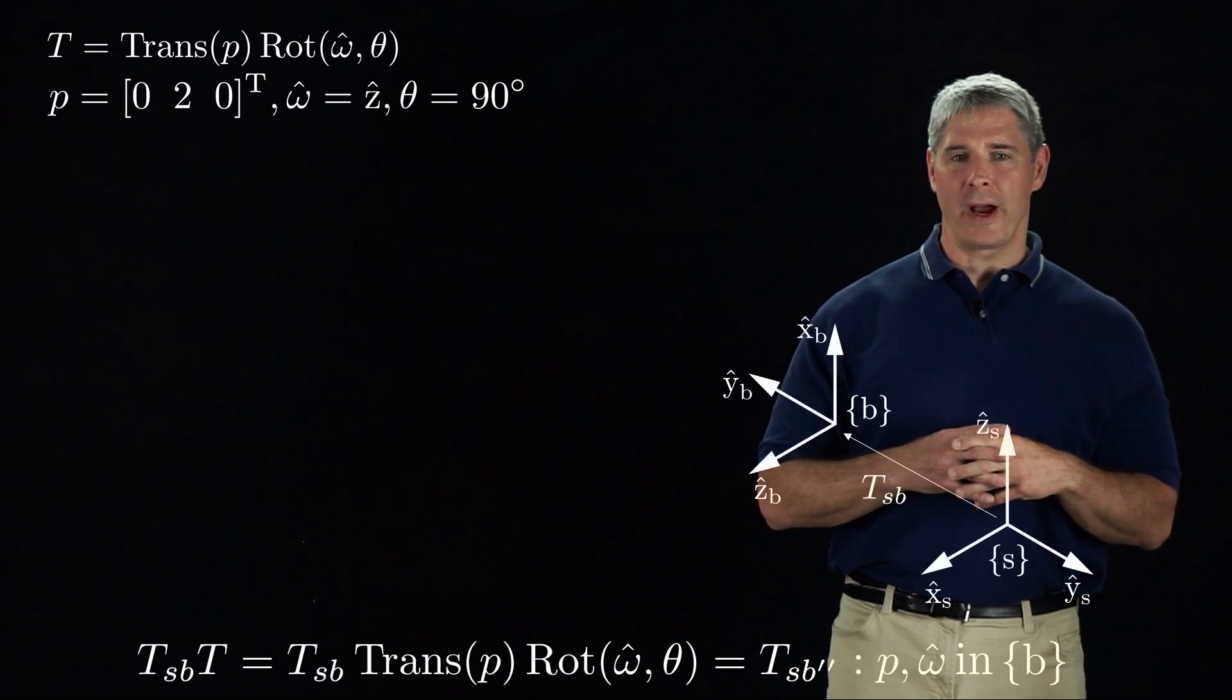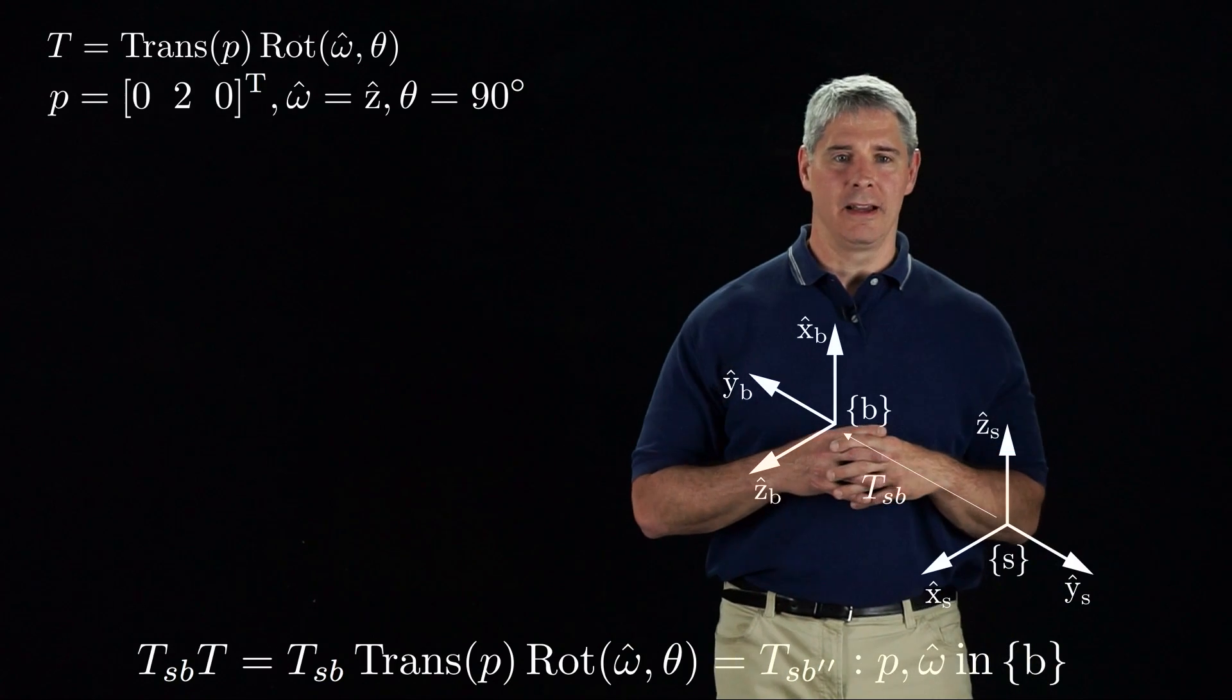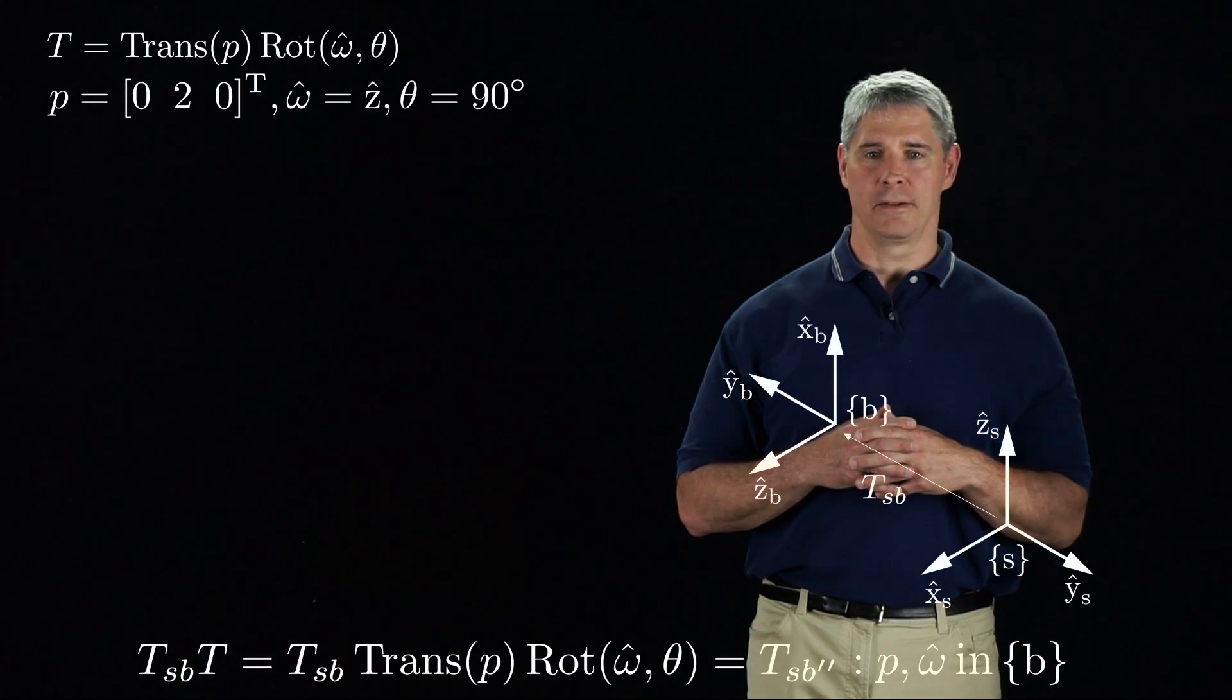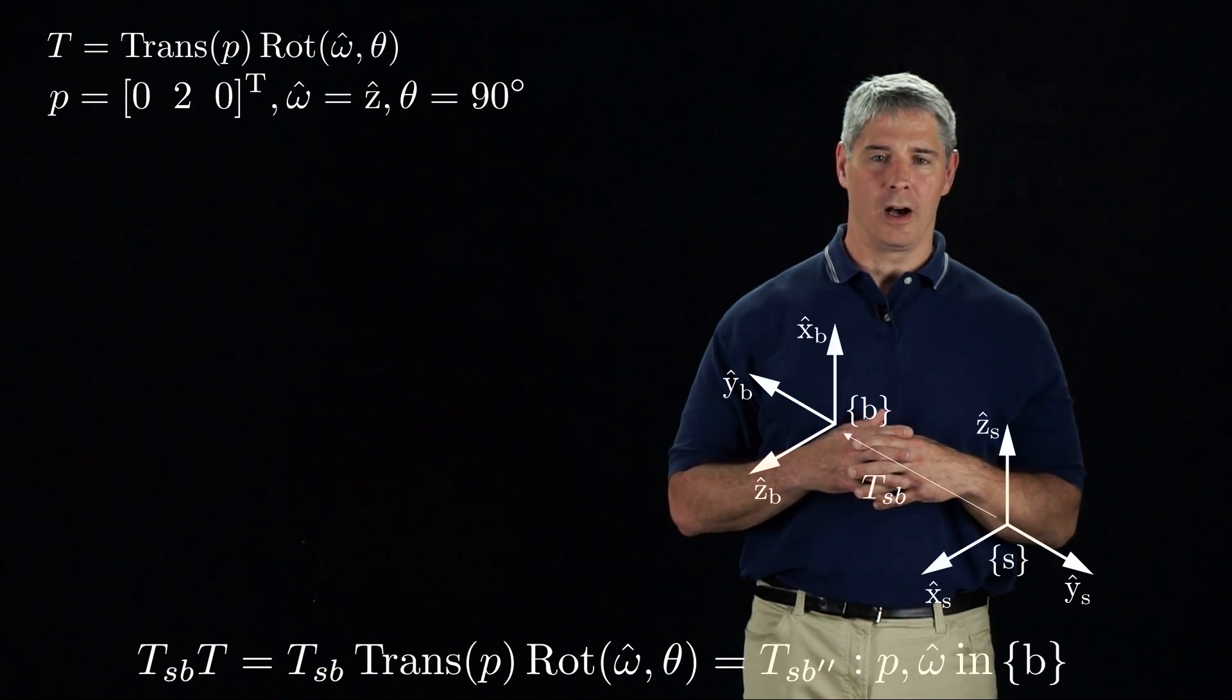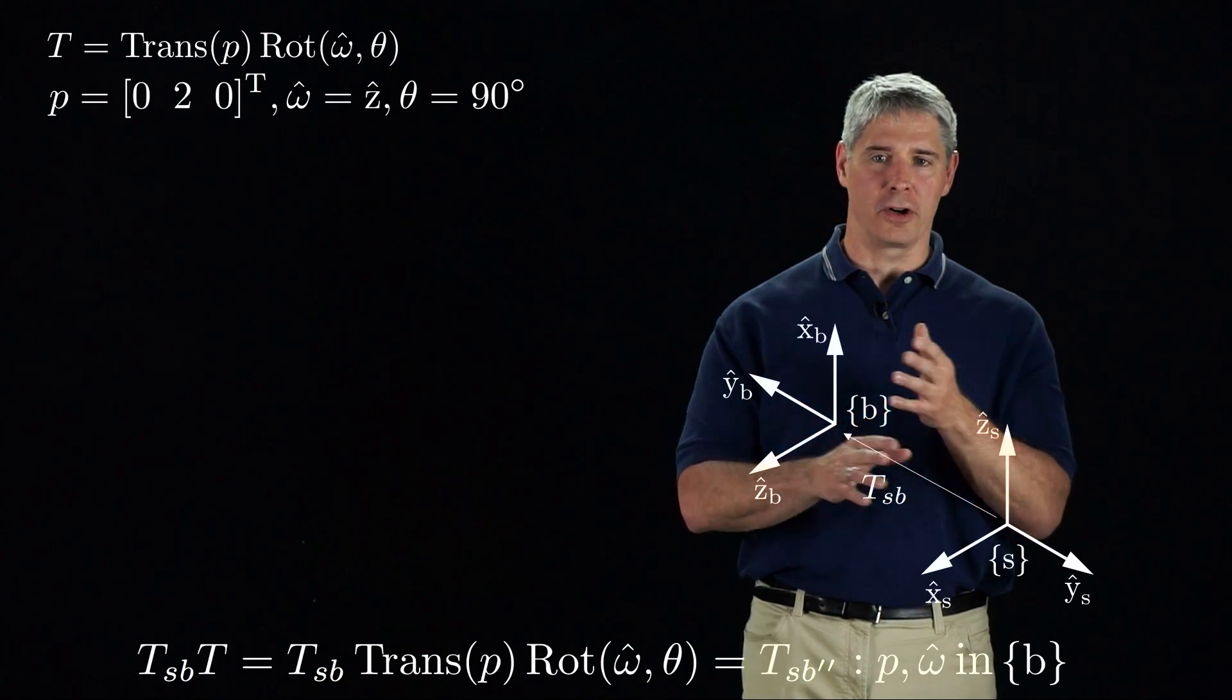If instead we right-multiply TSB by T, the vectors P and omega-hat are considered to be expressed in the frame of the second subscript of TSB, the B-frame. Also, the order of the operations is reversed.